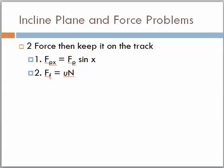That tells us that we have two forces that keep it on the track. We have the force that's pulling it down the hill in the x direction, which is Fp sine of x. And we have the force of friction, which is just mu times n. So we have both of these forces that are pulling it and keeping it on the track. So there's a lot of math and engineering going into the roads that we travel on and into NASCAR.